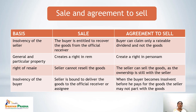On the basis of insolvency of the buyer, in a sale, if the buyer becomes insolvent, the seller is bound to deliver the goods to the official receiver or the assignee. But in an agreement to sell, if the buyer becomes insolvent before paying for the goods, the seller may not part with the goods — ownership of the goods will remain with the seller. These are the basic differences between a sale and an agreement to sell.